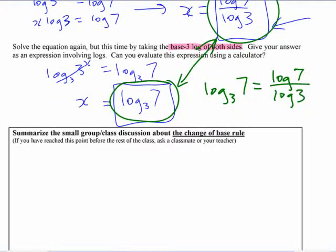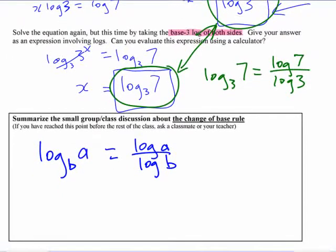If we had something else, some other numbers, like we had log base, should we use B for base and A for that? What has to be true there then? Log base B of A? That's essentially the change of base rule. It allows you to evaluate other bases using base 10 logarithms.